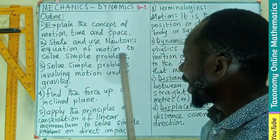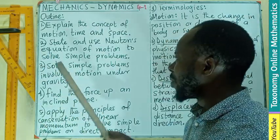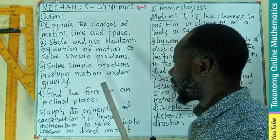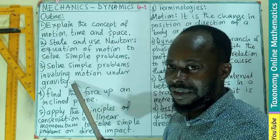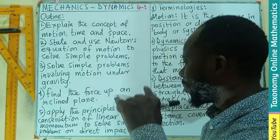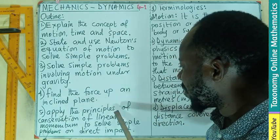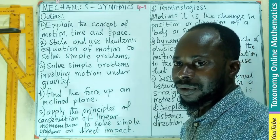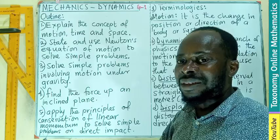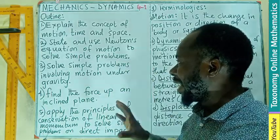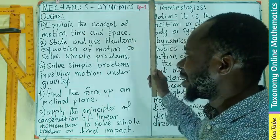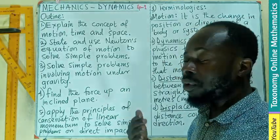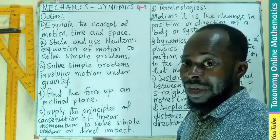We are going to start with an explanation of the concept of motion, time, and space. Then we will state and use Newton's equations of motion to solve simple problems. Then we solve a simple problem involving motion under gravity, then find the force up an inclined plane, and finally apply the principles of conservation of linear momentum to solve simple problems on direct impact. In this episode, as episode number one, we are going to concentrate on the first outline: the explanation of the concept of motion, time, and space.